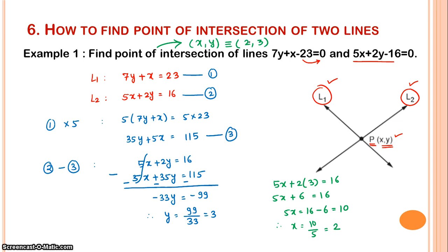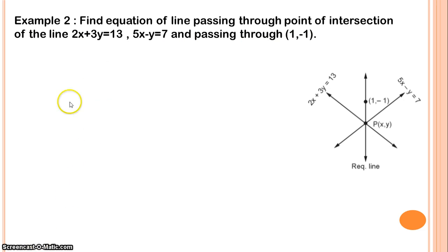So this is the method. When you have two line equations and you need to find the point of intersection, simply solve the two simultaneous equations for x and y. That gives you the point of intersection.